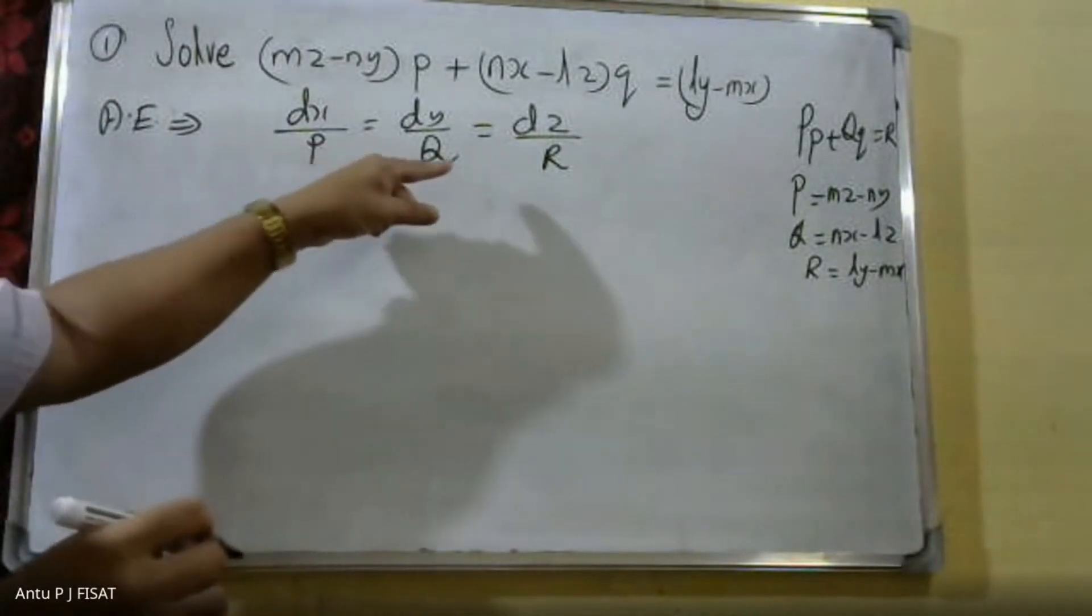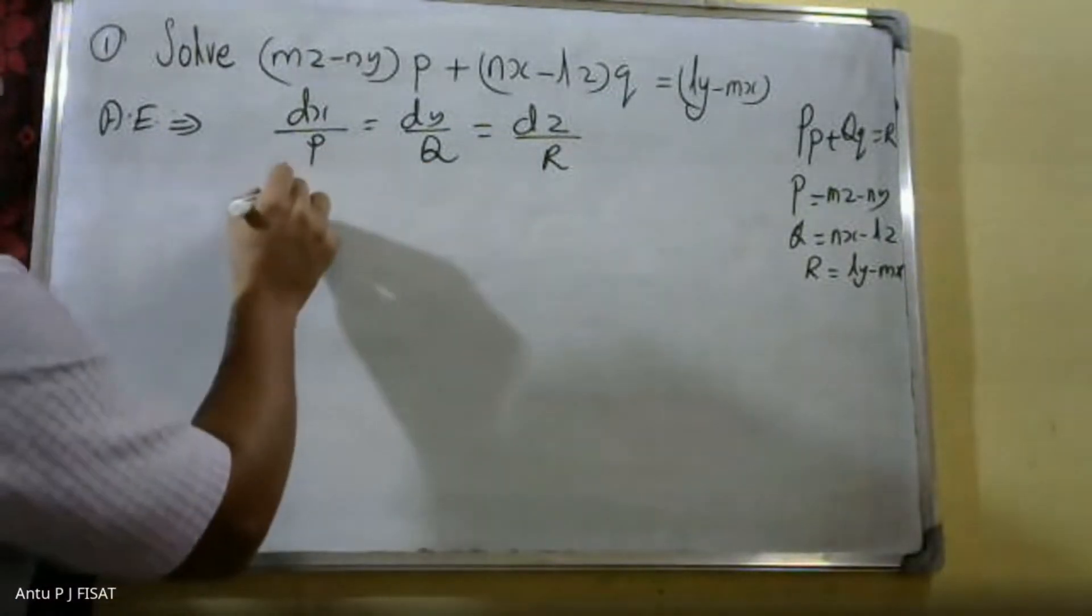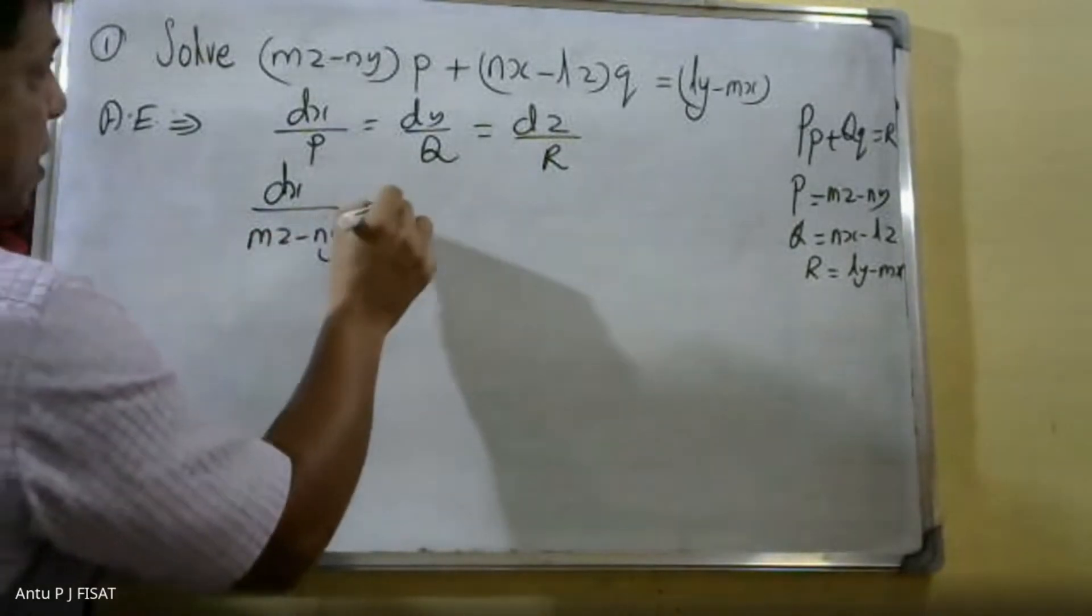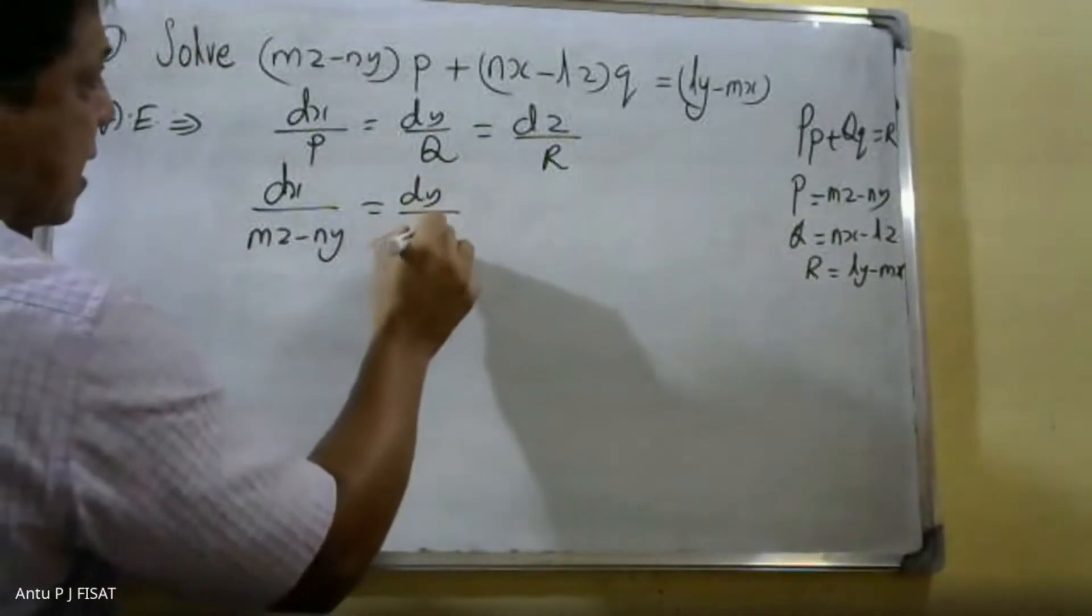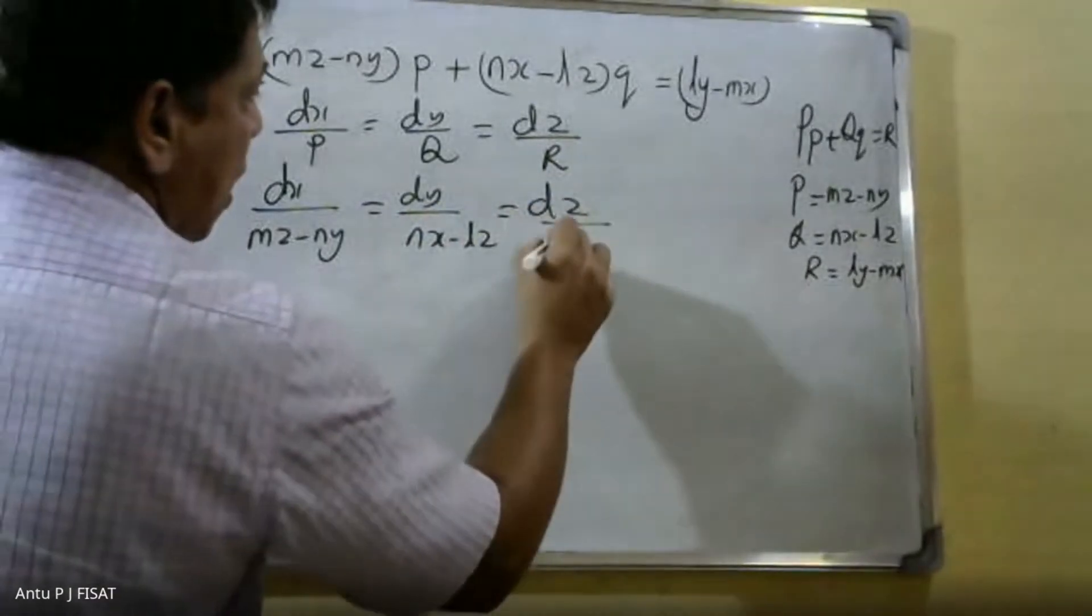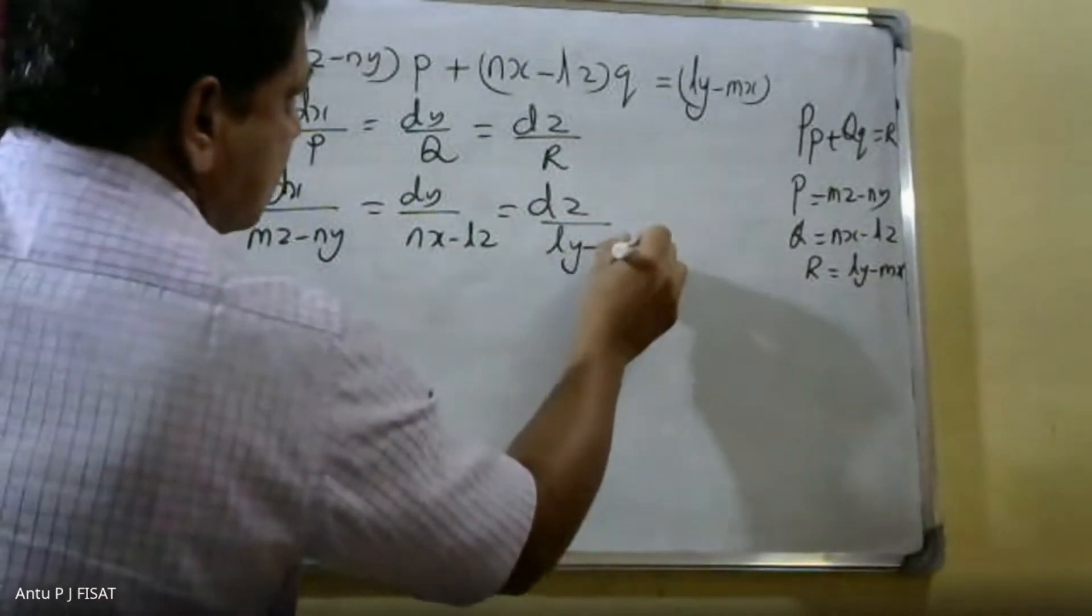Substituting p, q, r values, we get dx/(mz - ny) = dy/(nx - lz) = dz/(ly - mx).